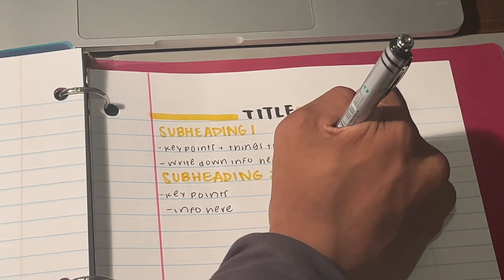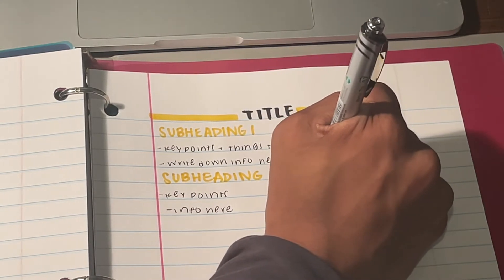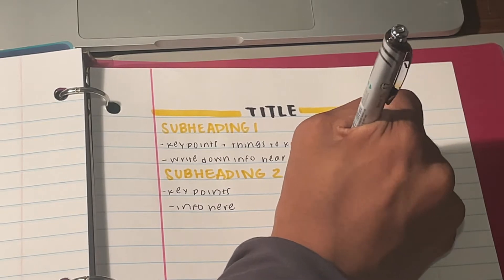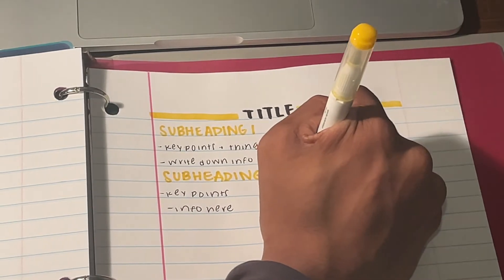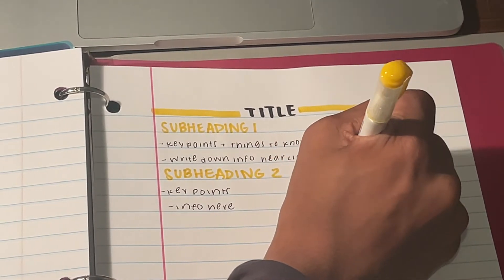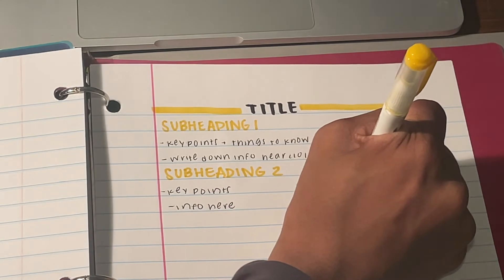I also like to include diagrams in my notes. For subjects like science and math, diagrams come up quite frequently. I draw my diagram on the side and I box it using my highlighter. I also like to add labels to my diagram so I know what it is and the different aspects of the picture.